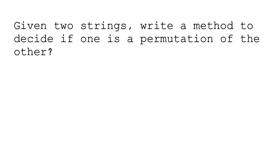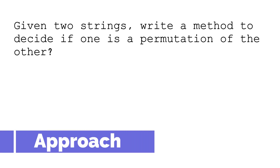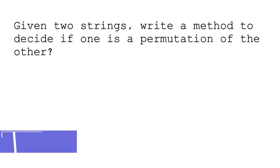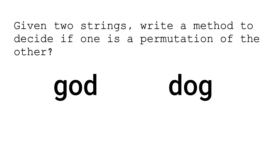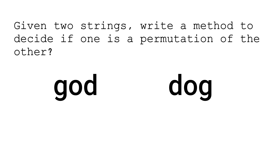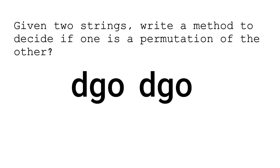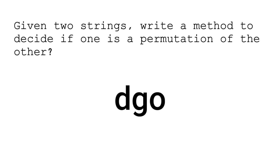Now let's look at the approach. If two strings are permutations of each other, they will have the same number of characters — meaning the same length. Second, they are in different order, so we just need to sort both of them and compare. If they are equal after sorting, then it's a permutation. That's the whole logic.